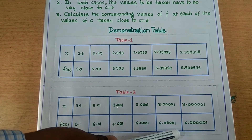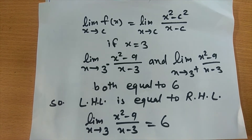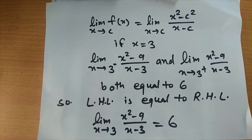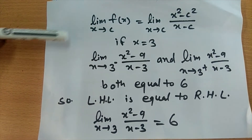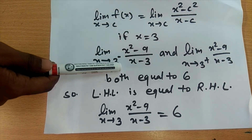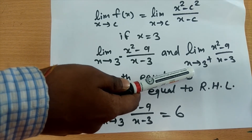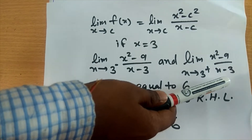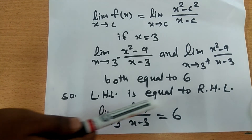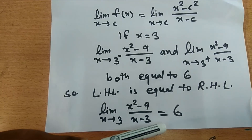Hence our objective: the left-hand limit as x tends to 3 minus of x squared minus 9 upon x minus 3, and the right-hand limit as x tends to 3 plus of x squared minus 9 upon x minus 3, both equal 6. So left-hand limit equals right-hand limit. Therefore, limit as x tends to 3 of x squared minus 9 upon x minus 3 equals 6.